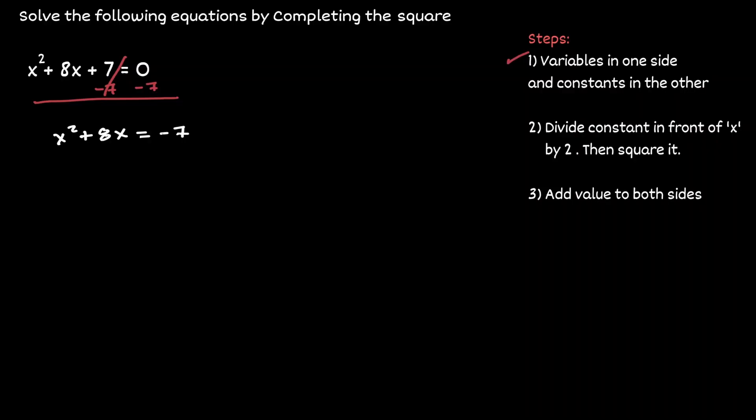Now that the first step has been done, we're going to look at the term that has a variable of x on it, which in this case will be the term of 8x. And we're going to take a look at the coefficient of x. And we're going to do two operations to it. First, we're going to divide it by two, which is going to give us four. And then we're going to square the result, which is going to give us 16. And with that, we're done with the second step.